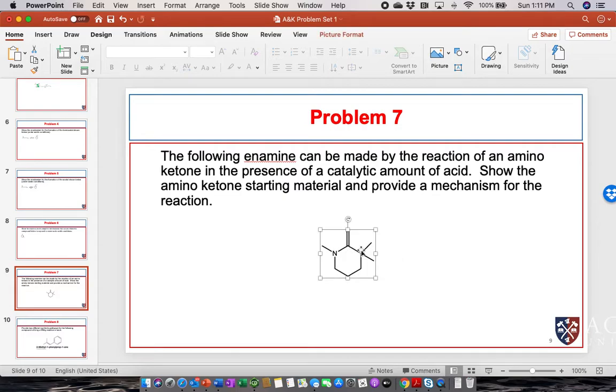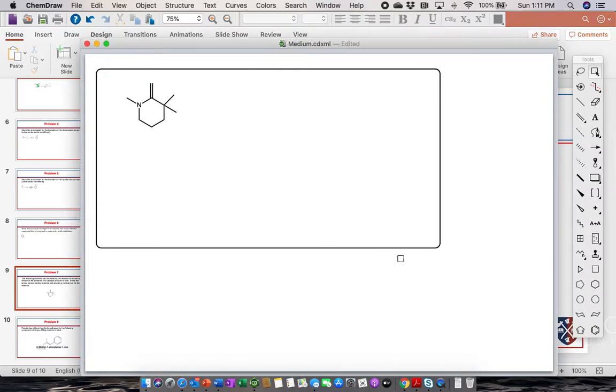So the first thing I want to do is find the amino ketone starting material. Well I've been going to ChemDraw and this is the compound that I'm trying to make. I know that I make enamines. This is an ene, an alkene, and an amine, an enamine. It's a cyclic enamine and I know I make them from carbonyl compounds like aldehydes and ketones.